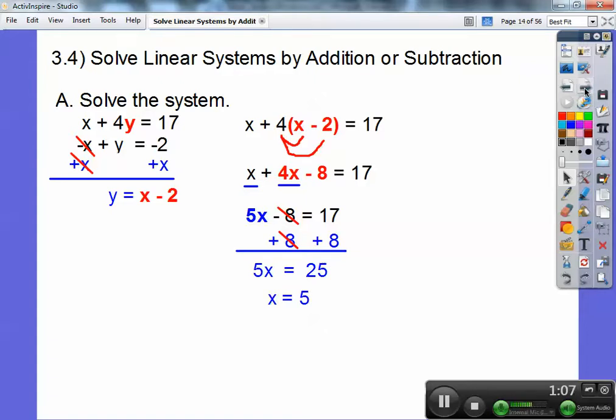And then don't forget, that's not the final answer. You've got to find out y also. So I'll plug in y right there. And then we get 5 minus 2 or 3. And write your answer as an ordered pair. Now I'm going to show you a new method. It's going to be the same problem right here. So let's remember this answer, 5 comma 3.